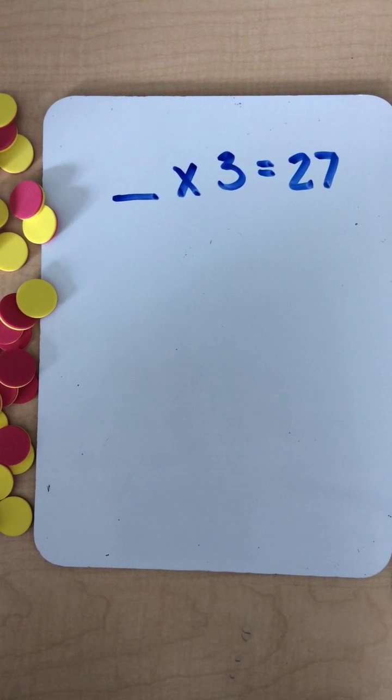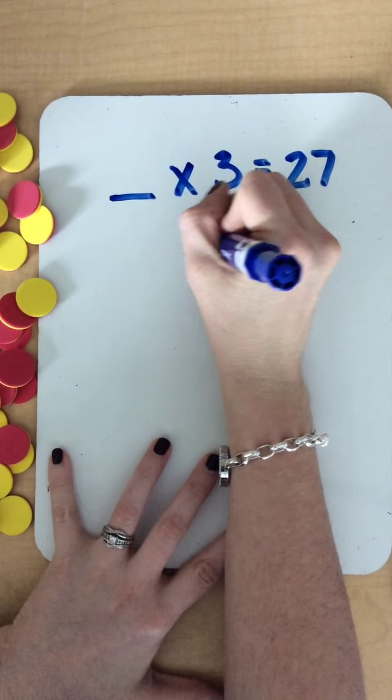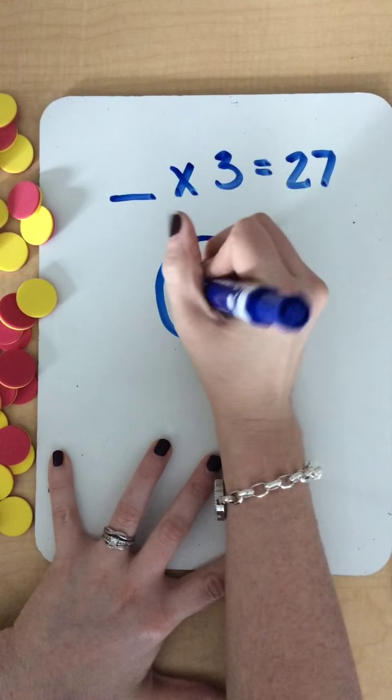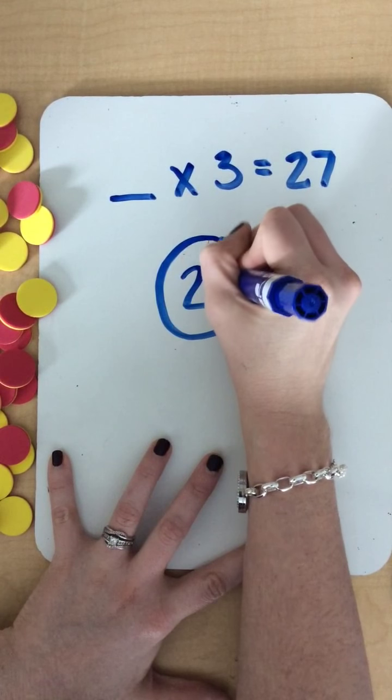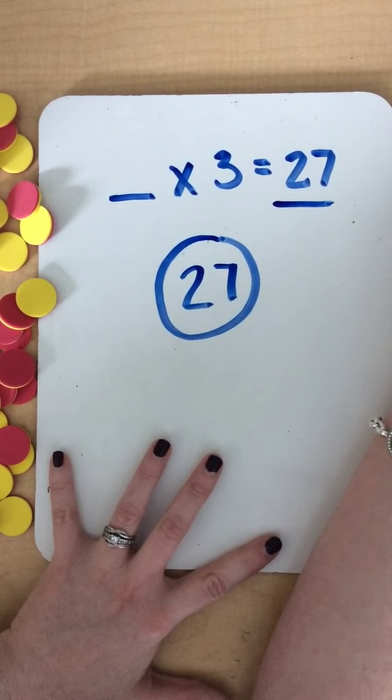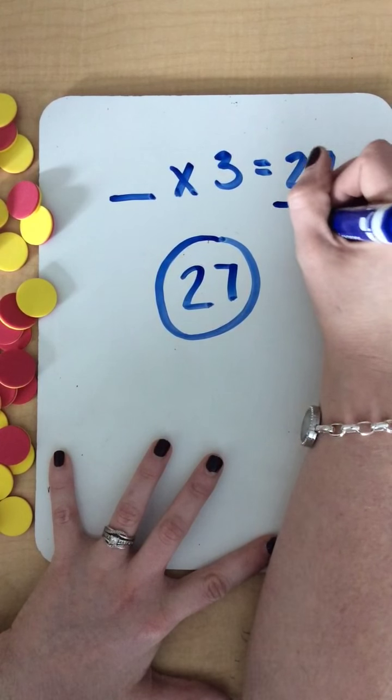When I use a number bond to figure out the unknown factor, I'm going to start first by drawing a circle and in the middle of the circle write the whole. So my whole in a multiplication sentence is going to be the product. So this is the product, or another name is the whole.